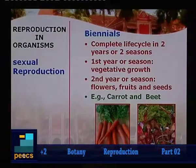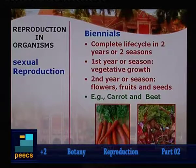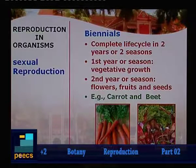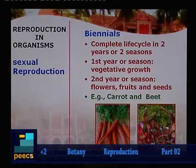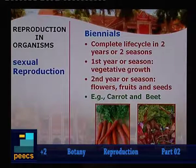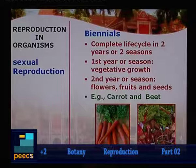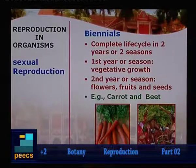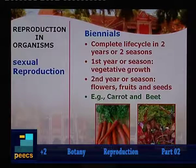The second category is biennials. The word reflects that biennial means two — the organism completes its life cycle within a span of two years. In the first year, they complete the vegetative phase; in the second year, they produce flowers, fruits and seeds. In this category, most plants have underground tubers or structures. Examples include carrots and beetroot.